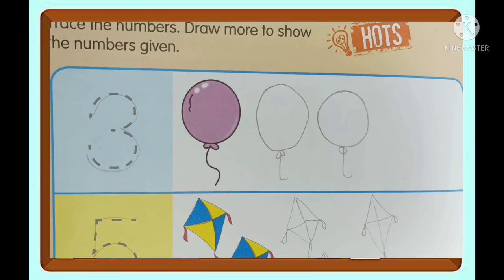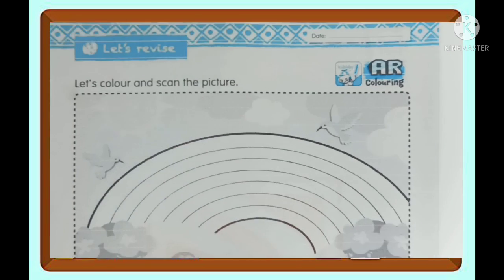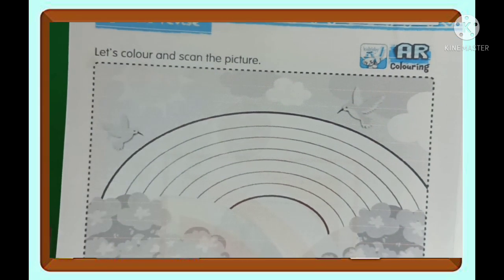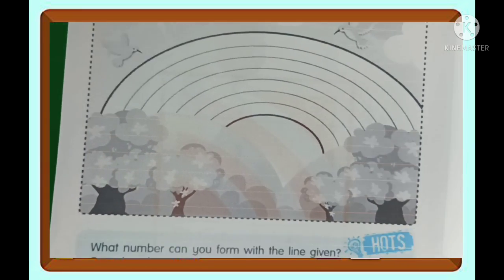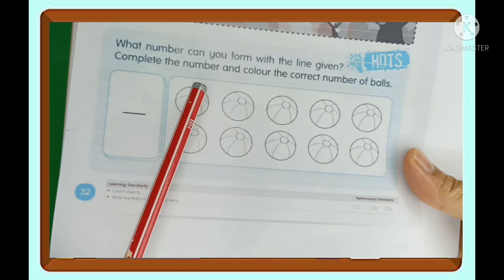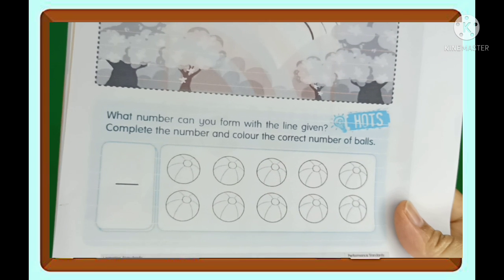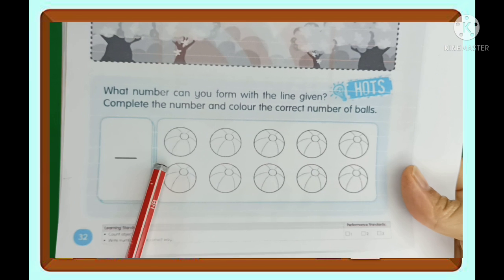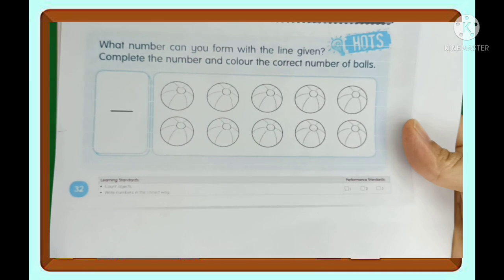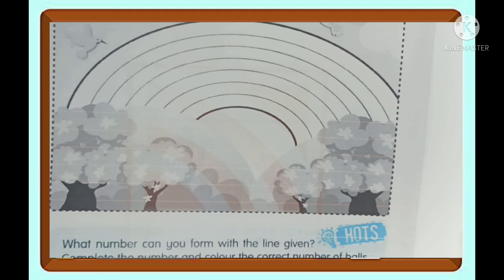Now we are going to go for our activity book. Please grab your activity book on page 32 — this page, the last page. It says here: let's color and scan the picture. So by this time, just color this beautiful rainbow the color that you want. And down here, we are going to complete the number and color the correct number of balls: one, two, three, four, five, six, seven, eight, nine, ten. Let's see what number you can form with the lines given, and then color how many balls. We finished our math study, boys and girls. See you again next time for our next topic. Bye-bye for now.